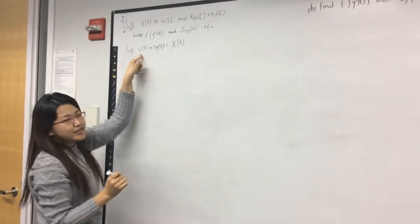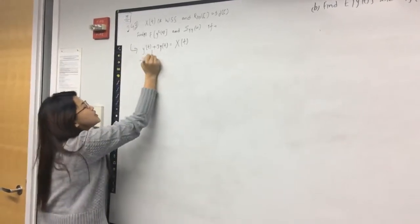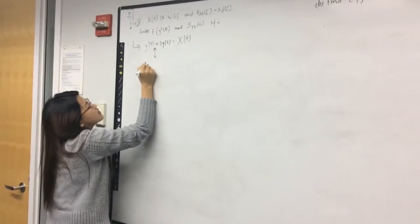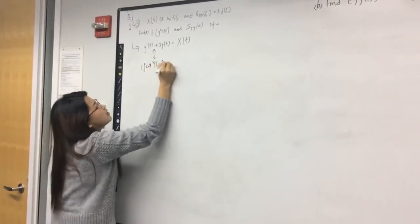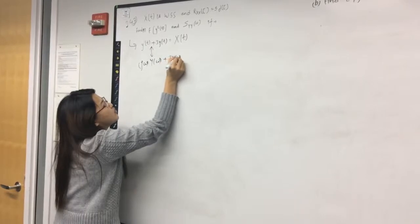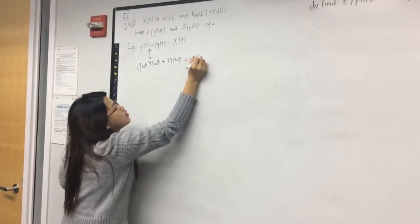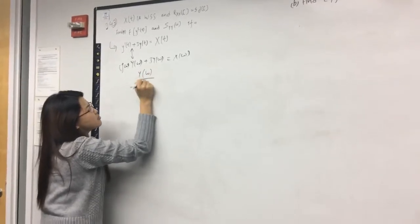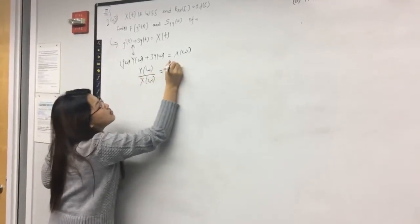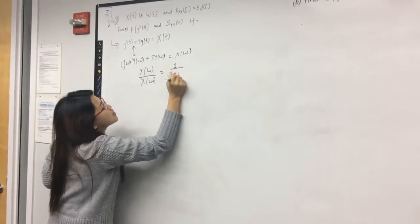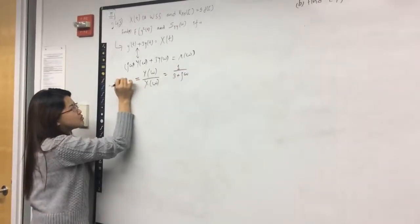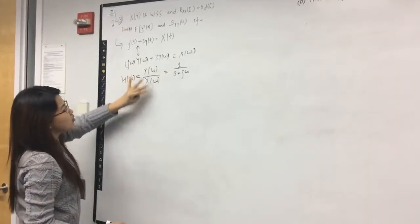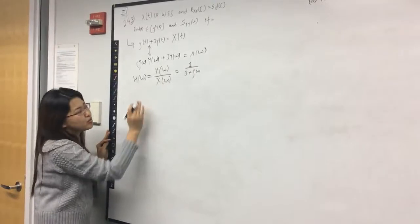The first term is the derivative of y(t). When we take the Fourier transform of the whole equation, we get jωY(ω) + 3Y(ω) = X(ω). Rearranging, we get H(ω) = Y(ω)/X(ω) = 1/(3 + jω). This term we can represent as H(ω), since Y(ω) can be represented as a product of X(ω) and H(ω).